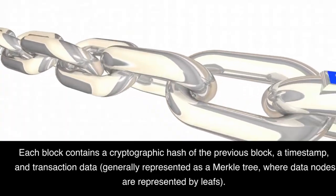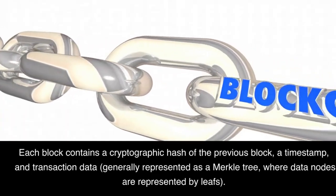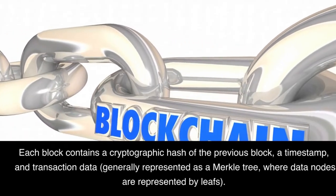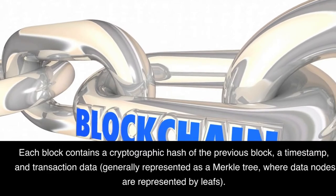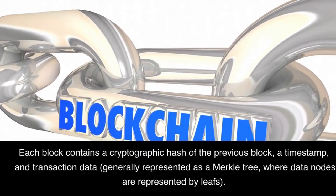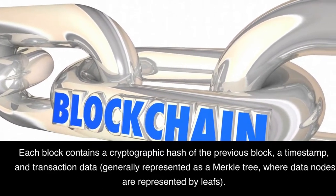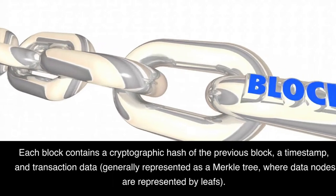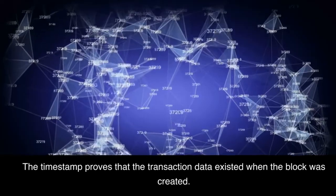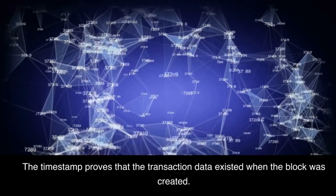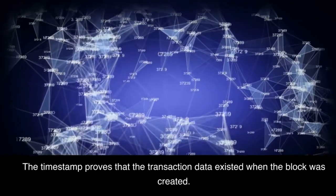Each block contains a cryptographic hash of the previous block, a timestamp, and transaction data, generally represented as a Merkle tree, where data nodes are represented by leafs. The timestamp proves that the transaction data existed when the block was created.